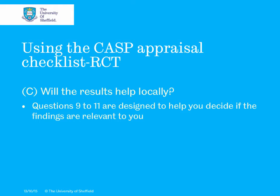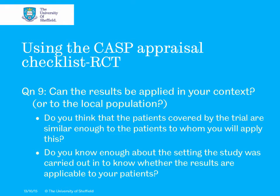So you've established whether the results and the study are valid, and you've established what the results actually are. These two final questions will help you decide whether the findings are relevant to you and whether you're going to make any changes based on the findings of this specific paper. Question nine asks: can the results be applied in your context or to your local population?